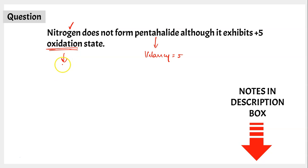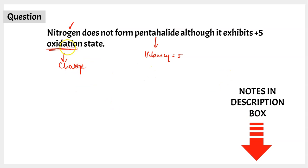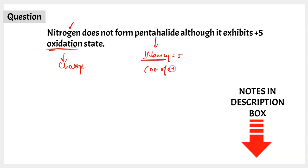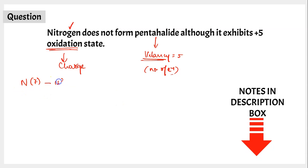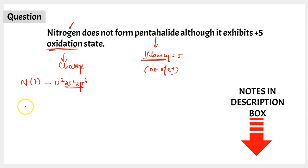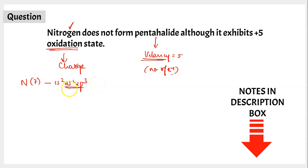Oxidation state is the apparent charge that can exist over any atom, and oxidation state is not always equal to valency. Valency is the number of electrons that can be lost, gained, or shared during chemical bonding. Nitrogen's atomic number is 7, so its configuration is 1s², 2s², 2p³. It has a half-filled configuration, making it slightly more stable compared to adjacent group elements.